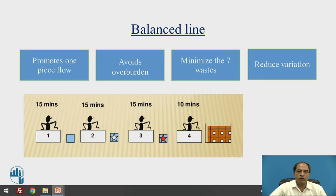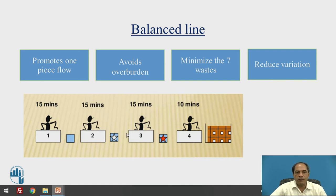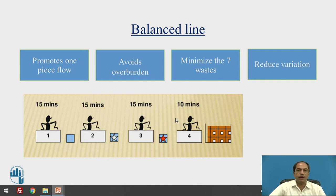Now, what is a balanced line and what is an unbalanced line? Looking at this figure, there are four workstations taking 15 minutes, 15 minutes, 15 minutes, and the last workstation takes 10 minutes. This can be called a fairly balanced line because the first three workstations have almost equal time and the last workstation has only a small unbalanced component remaining.